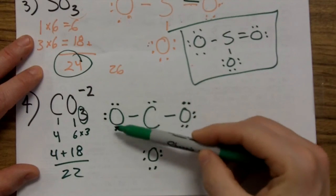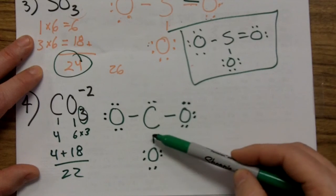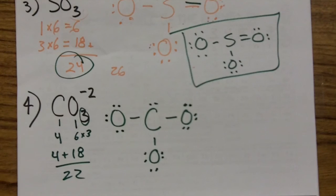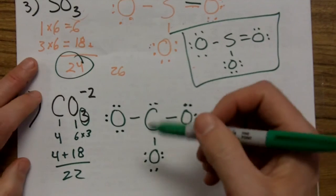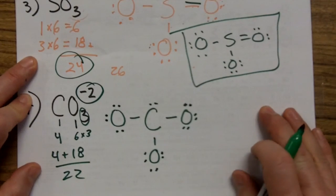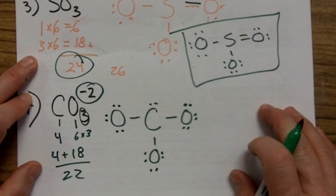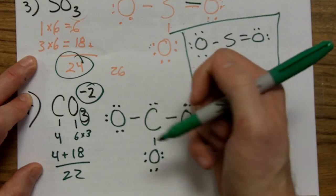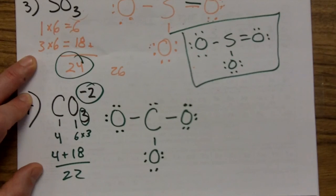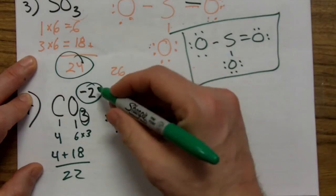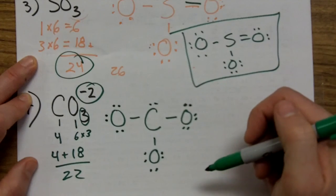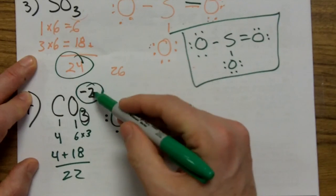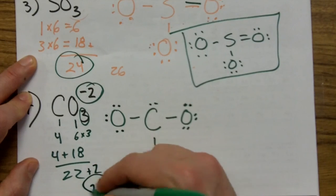Counting what we used: two, four, six, eight, ten, twelve, fourteen, sixteen, eighteen, twenty, twenty-two, twenty-four, twenty-six. We used twenty-six. But we need to stop and think about this charge. A charge means you have a different number of electrons than what we counted. A negative charge means you have more electrons — negative electrons are negative, so more electrons means a negative charge. It's a negative two, so we have two more electrons — not twenty-two but twenty-four. Had it been a positive two, we would have had two fewer electrons.